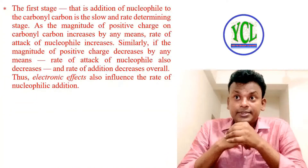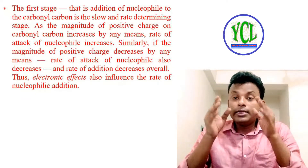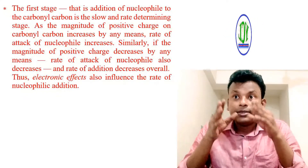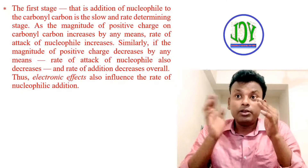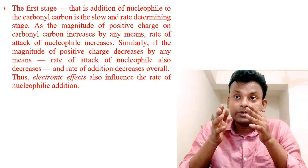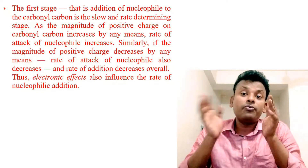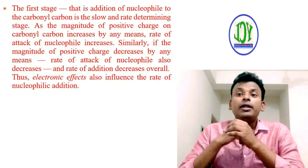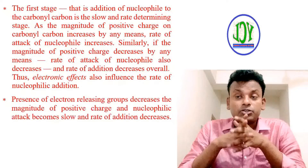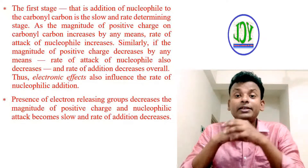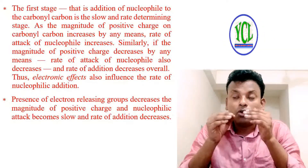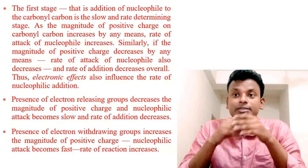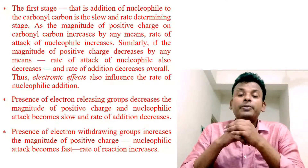In the first stage, the addition of the nucleophile to the carbonyl carbon is the slow step, that is the rate-determining step. As the magnitude of positive charge on the carbonyl carbon increases, the rate of attack of the nucleophile increases. Similarly, if the magnitude of the positive charge decreases, the rate of nucleophilic attack also decreases and the rate of addition reaction decreases. The electronic effect also influences the rate: the presence of an electron-releasing group (plus I effect) decreases the magnitude of positive charge, making nucleophilic attack slow. The presence of an electron-withdrawing group (minus I effect) increases the magnitude of positive charge, making nucleophilic attack fast.